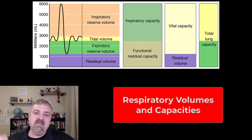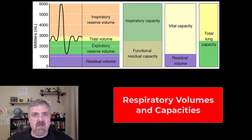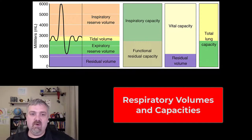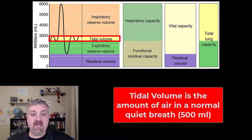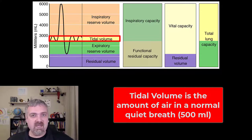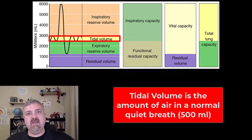Hey everybody, Dr. Rowe here. In this video we are going to talk about your lung volumes and capacities, so we will go through each one of these and I will add a couple more things as well. We are going to start with what is called the tidal volume right there in the middle. The tidal volume is the amount of air you normally move in a normal quiet respiratory cycle, a breath in and a breath out.